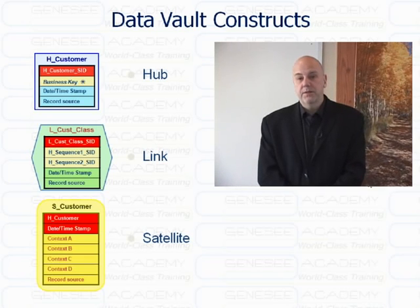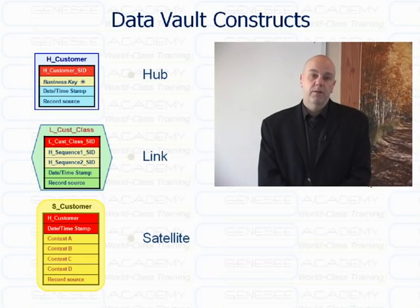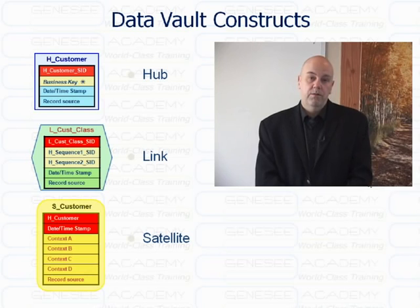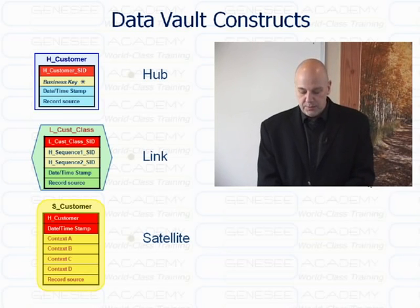We have a hub — that's the business key. We have a link that is a relationship type. And then we also have a satellite that defines context.